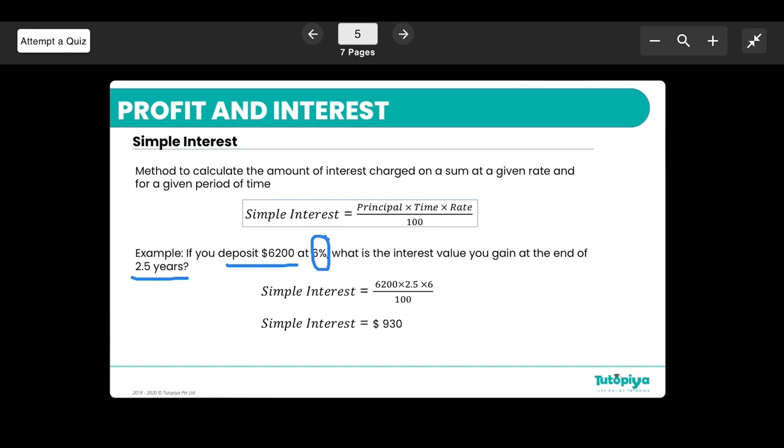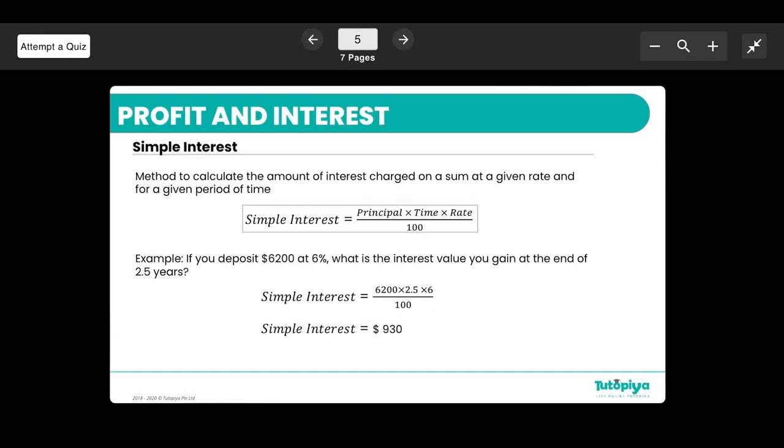And this then gives us that the simple interest is $930. Just keep in mind that this amount here is basically just the interest. So if you were asked to find out the total amount of money that they have at the end of this period, then that will be the $6,200 plus the $930.